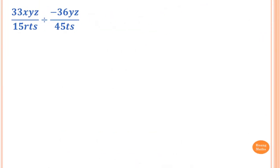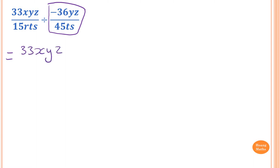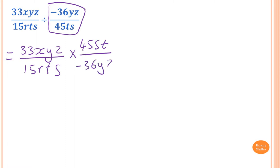Please stop the video and try this one yourself. For this problem, flip the second fraction to make it multiplication. So it equals 33xyz over 15rts times 45st over negative 36yz. The s cancels with s first.